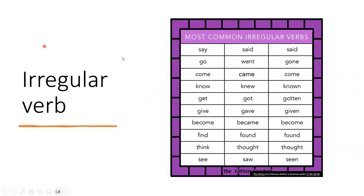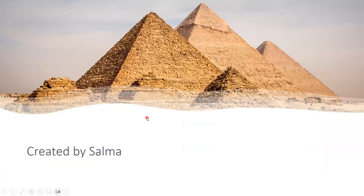Here are some examples of irregular verbs: say → said, go → went, come → came, know → knew, get → got, give → gave, become → became, find → found, think → thought, see → saw. We have finished this lesson — I hope you understood. See you at the coming lesson. Have a good day. Goodbye.